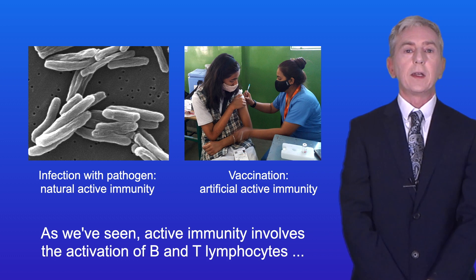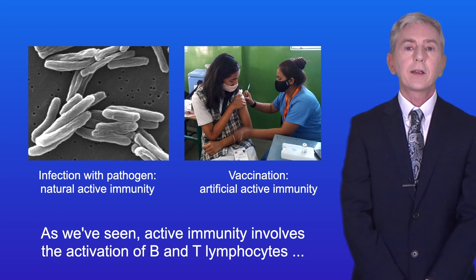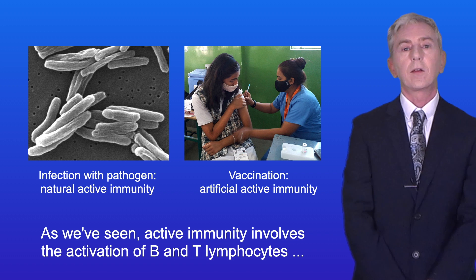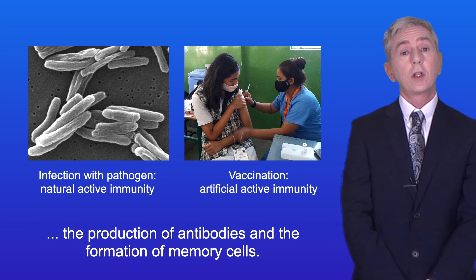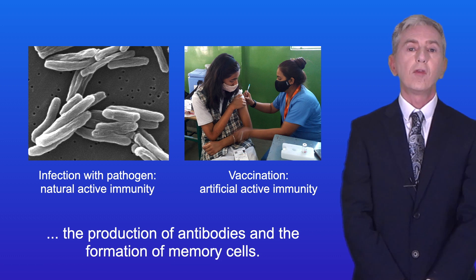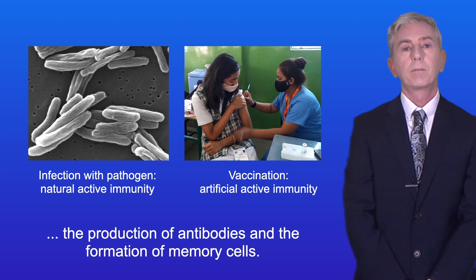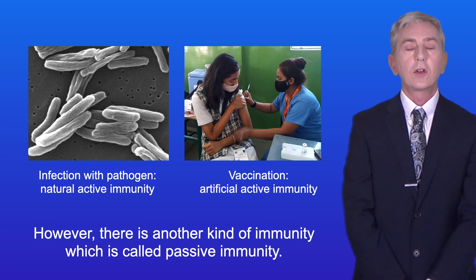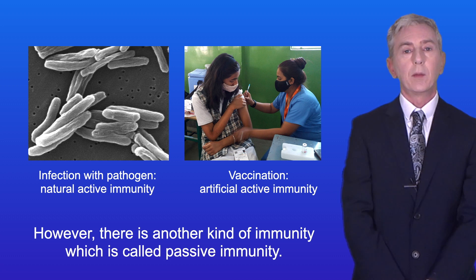So as we've seen, active immunity involves the activation of B and T lymphocytes, the production of antibodies, and the formation of memory cells. However, there is another kind of immunity which is called passive immunity.